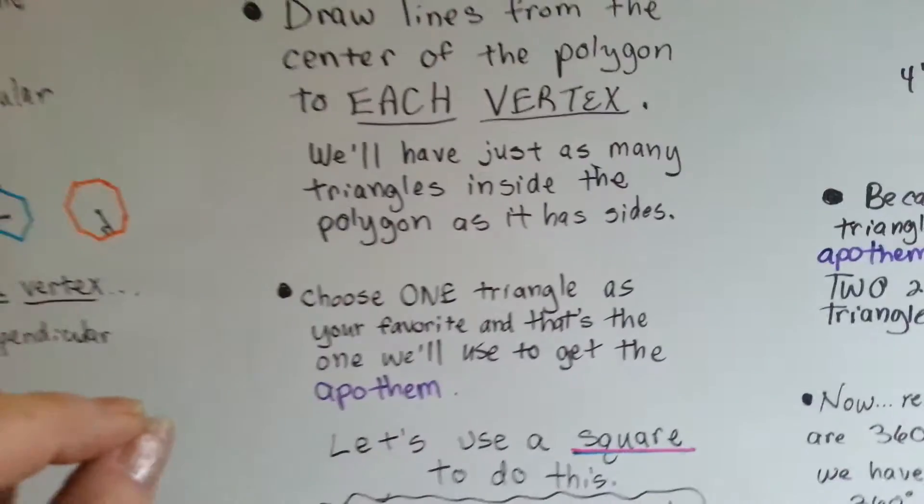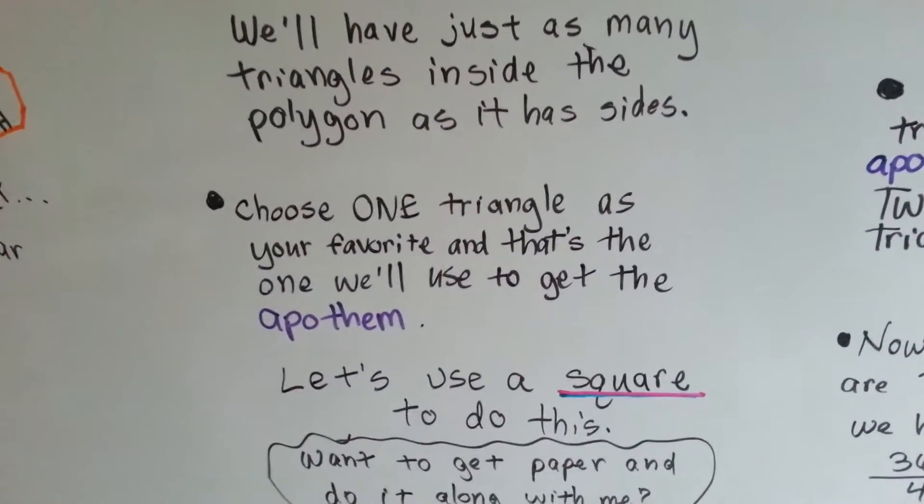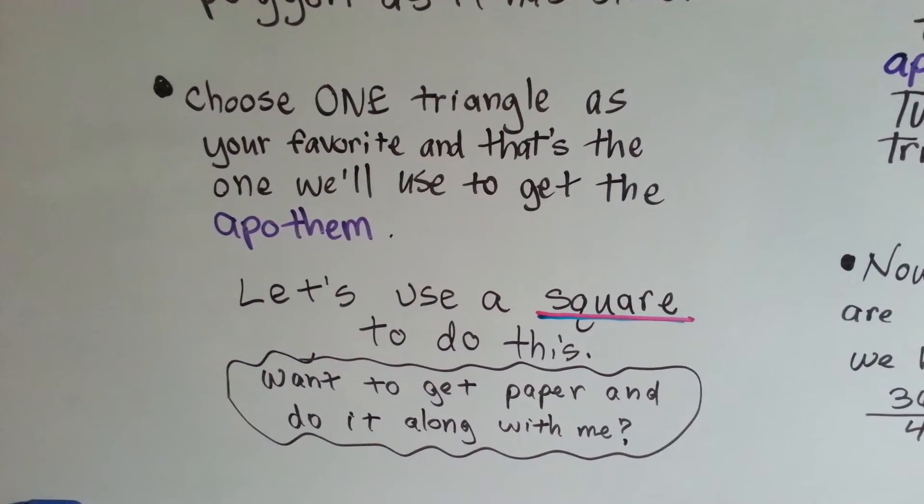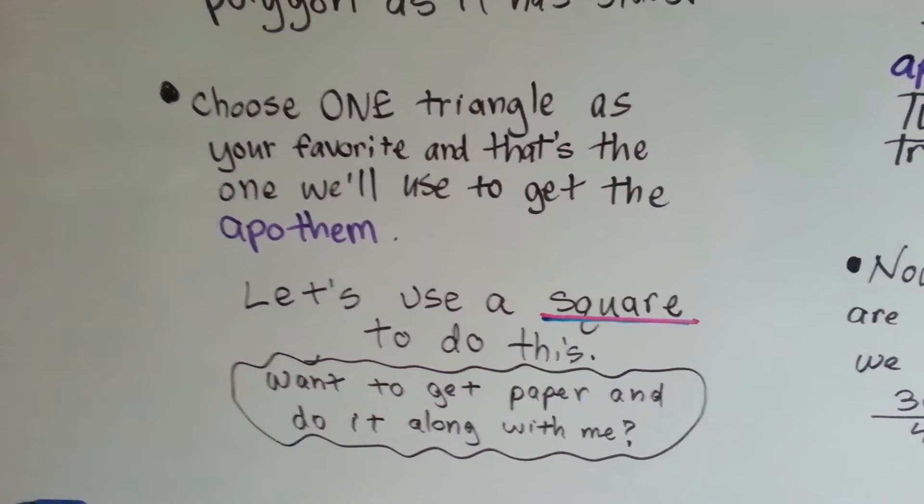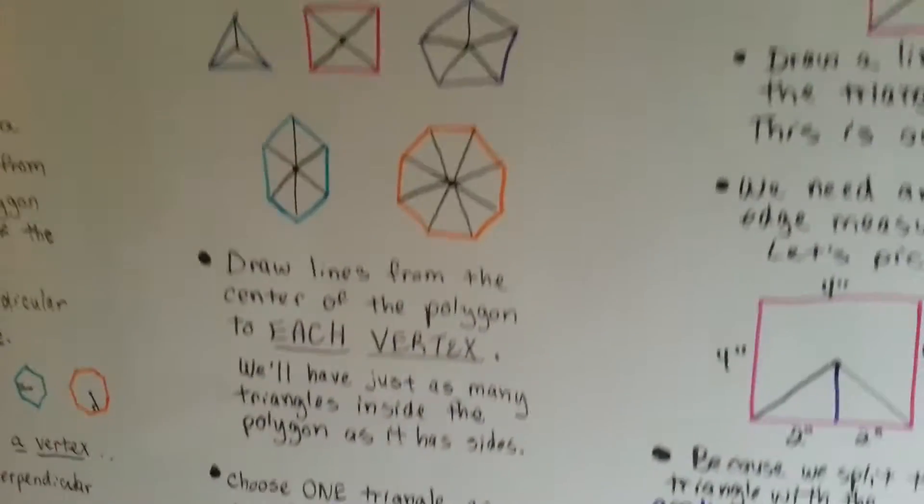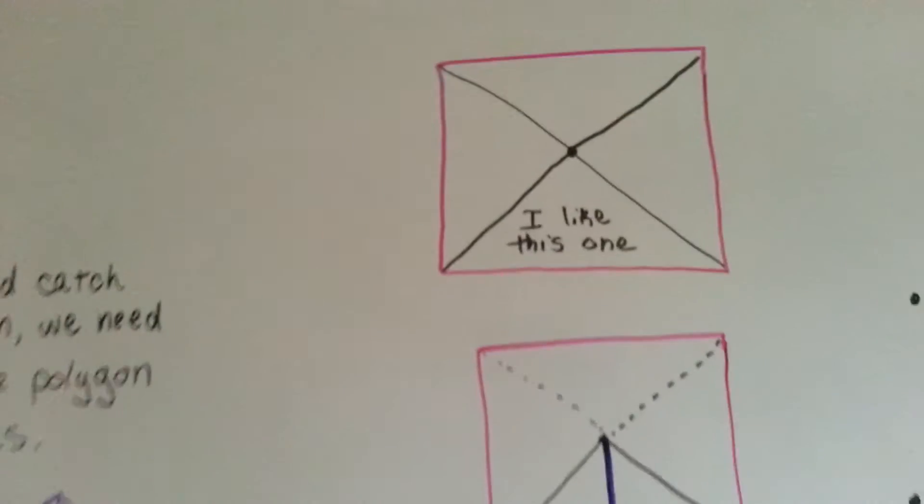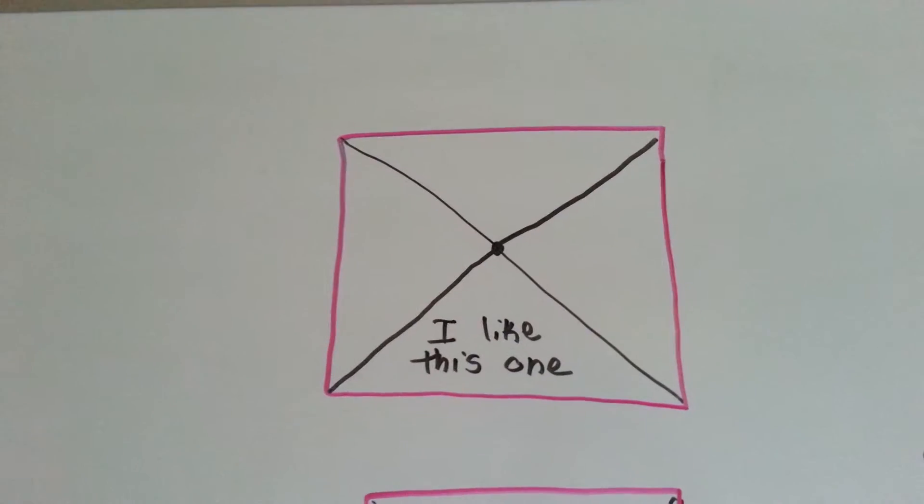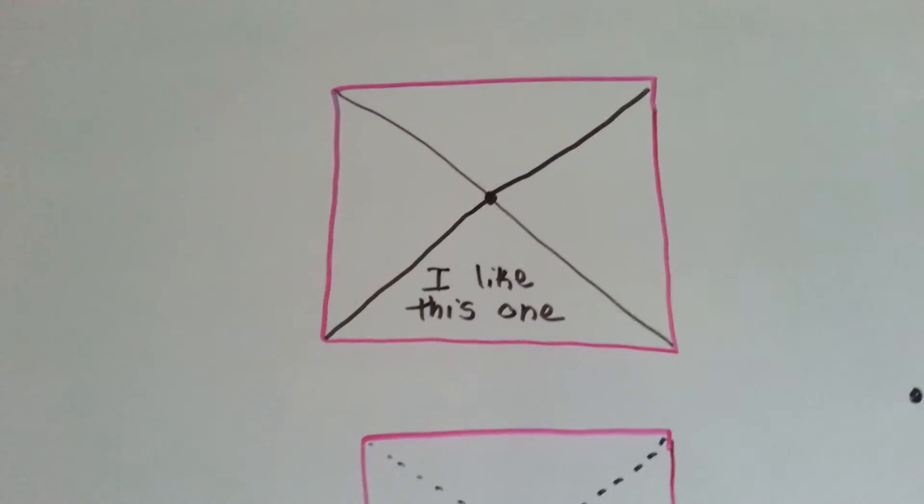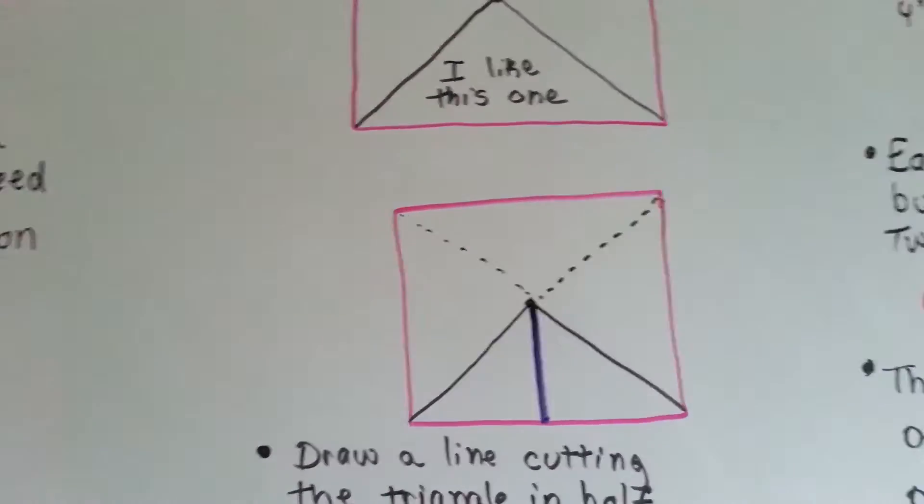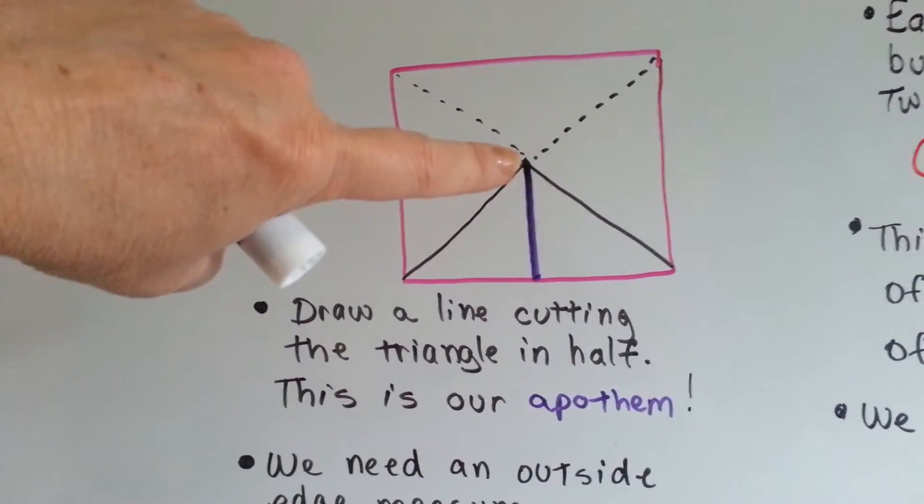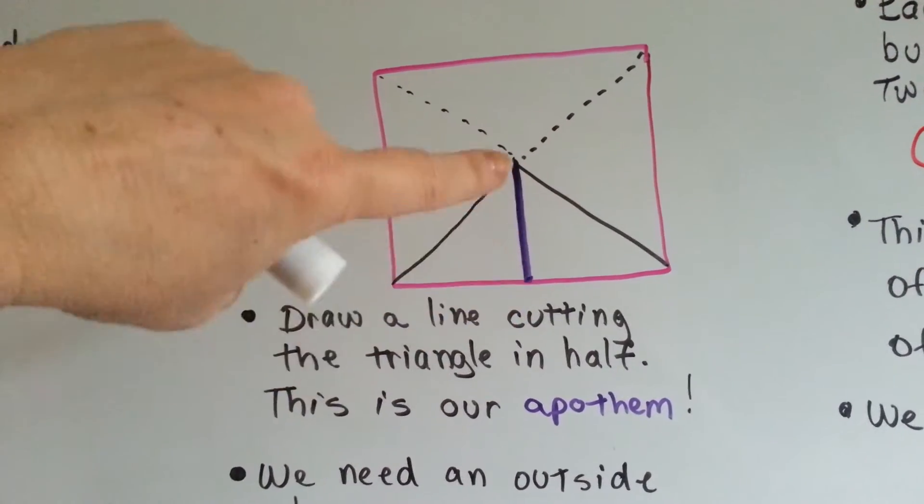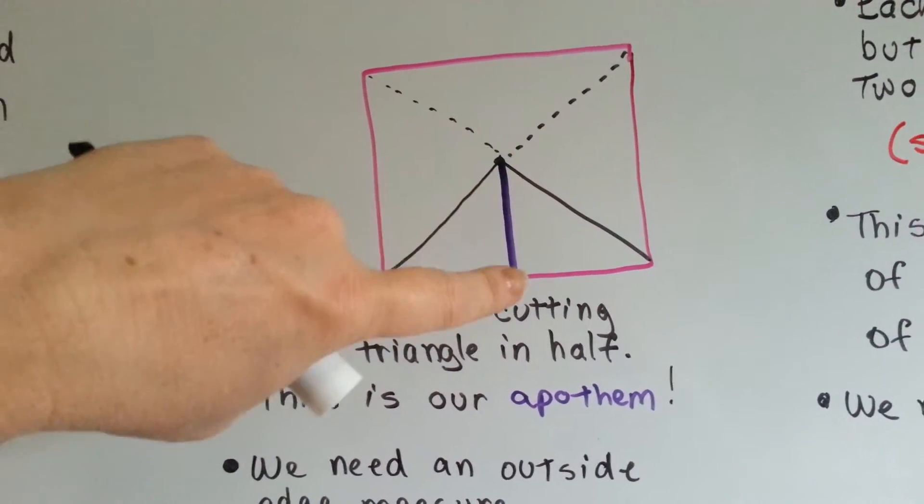You choose one triangle as your favorite, and that's the one we use to get the apothem. So, I want to use a square to do this. If you want to get paper and help do it along with me, that would be great, because then you can keep your notes and remember how we did this. So, I broke a square into four triangles like this, and I chose the one I like, and that's the one I'm going to work with to find the apothem. Now, I draw a line cutting this triangle in half. That is our apothem. It's going right into the flat side, making the perpendicular line.